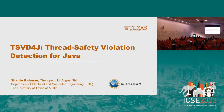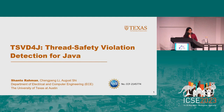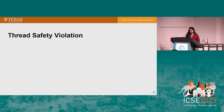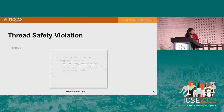I am Shanto Rahman from the University of Texas at Austin. Today I'll present our work on TSVD4J, which stands for Thread Safety Violation Detection for Java. Thread safety violation is a situation when multiple threads try to access shared memory locations but due to different thread interleavings, crashes or data inconsistency can occur.